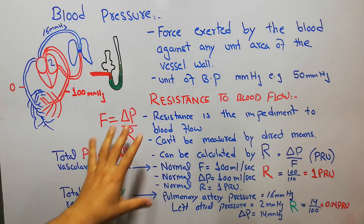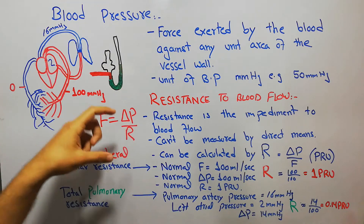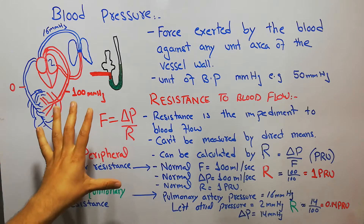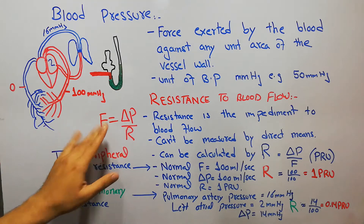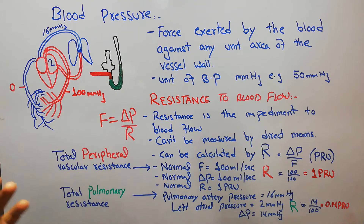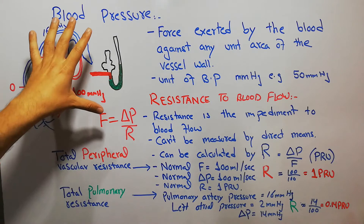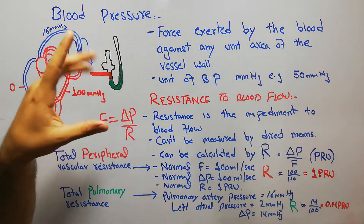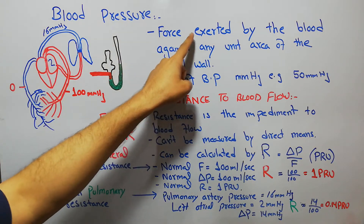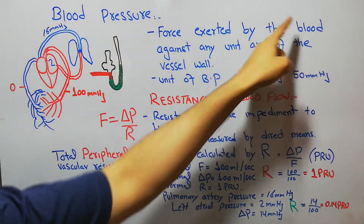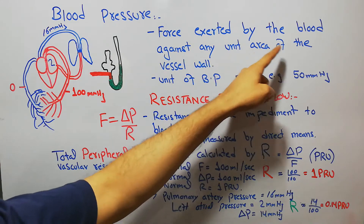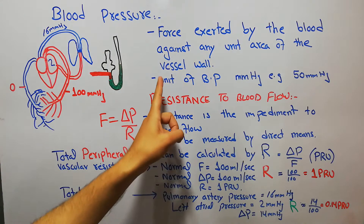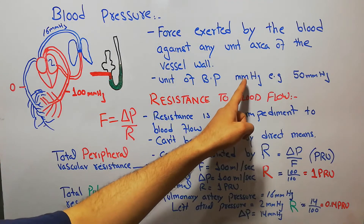Both blood pressure and resistance are very important for the calculation of blood flow. Blood flow can also be measured with an ultrasonic Doppler flow meter or an electromagnetic flow meter. Blood pressure is defined as the force exerted by the blood against any unit area of the vessel wall, and its unit is millimeters of mercury (mm Hg).